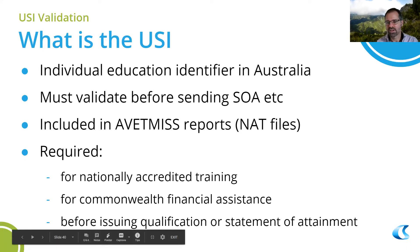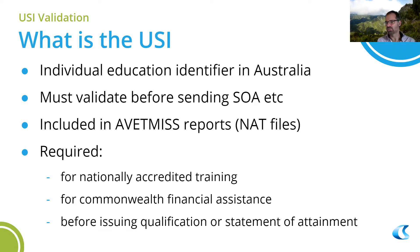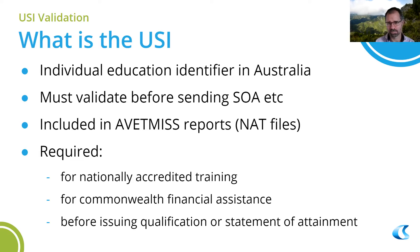So what is the USI? The USI is the unique identifier set up by the Australian government. You have to validate it before sending statements of attainment — that's an obligation as an RTO. There's also a requirement to submit valid USIs in your AVETMISS data. It's worthwhile getting that information correct prior to submitting your AVETMISS data, because trying to get correct information about a student after they've attended a course is quite difficult.